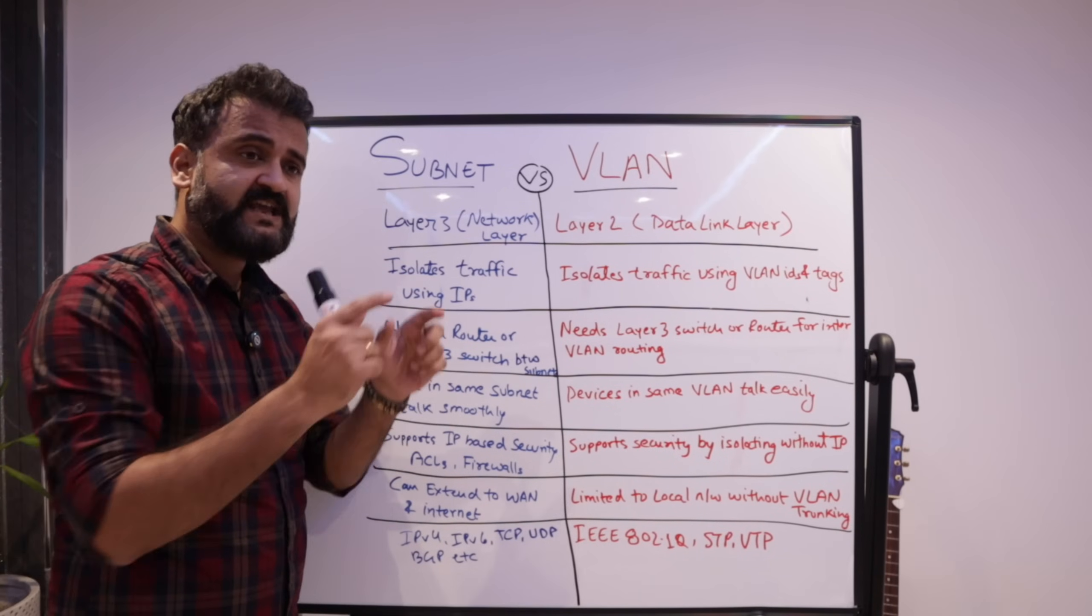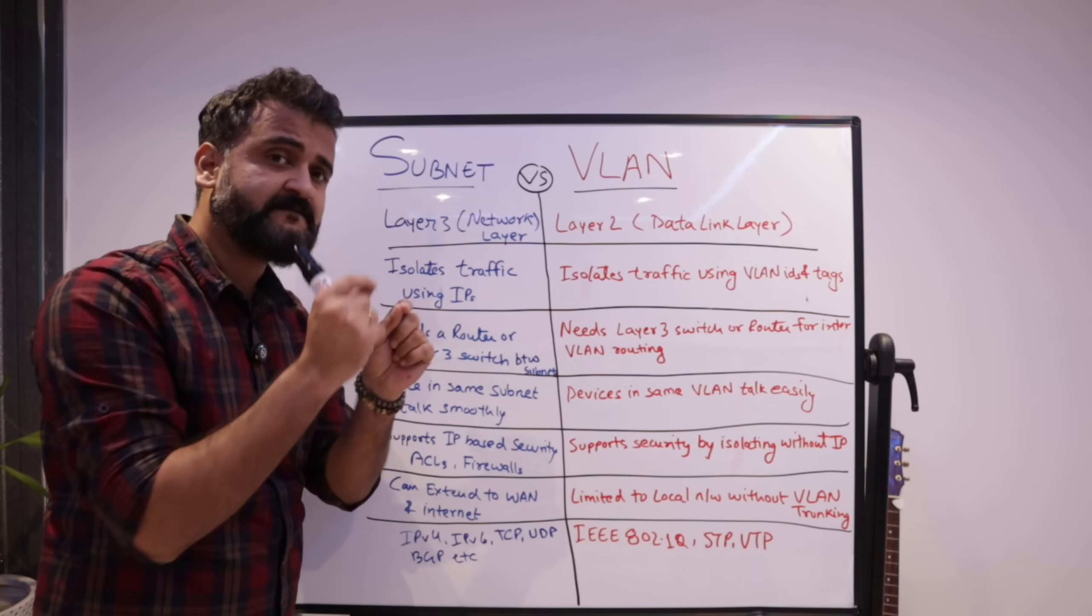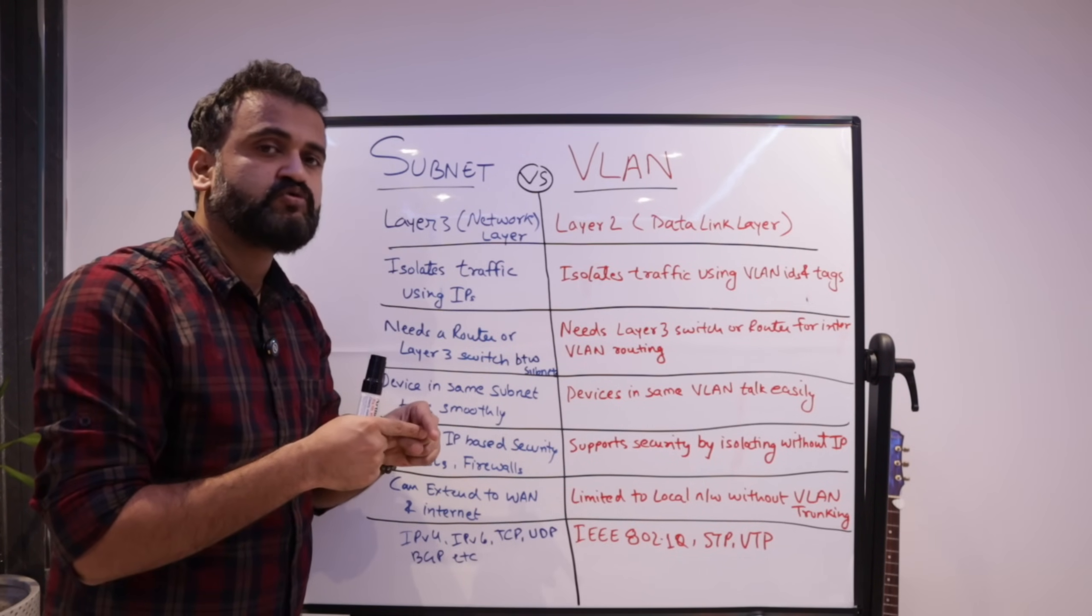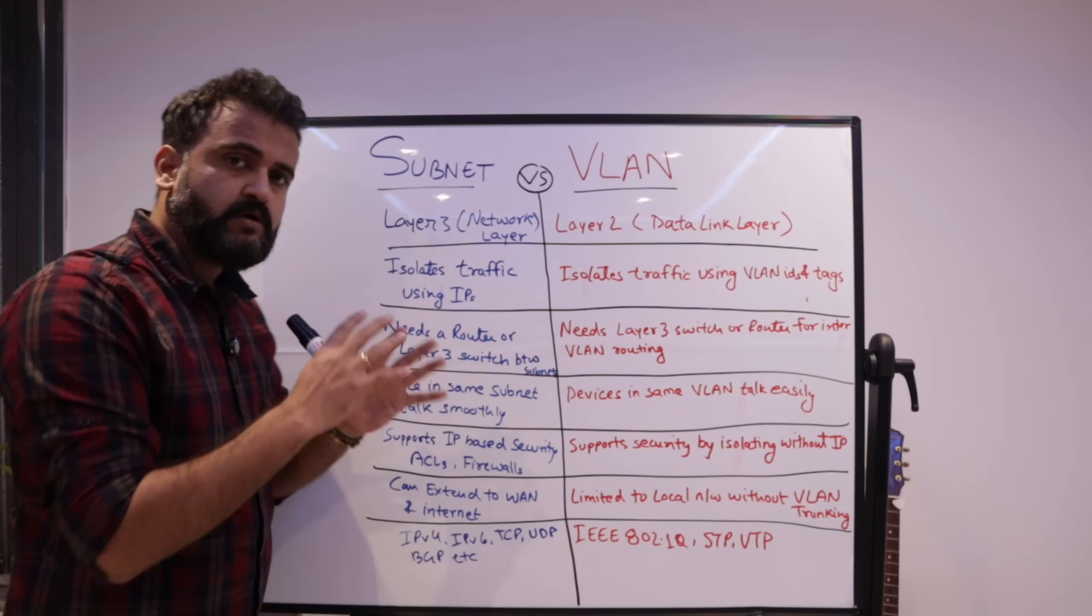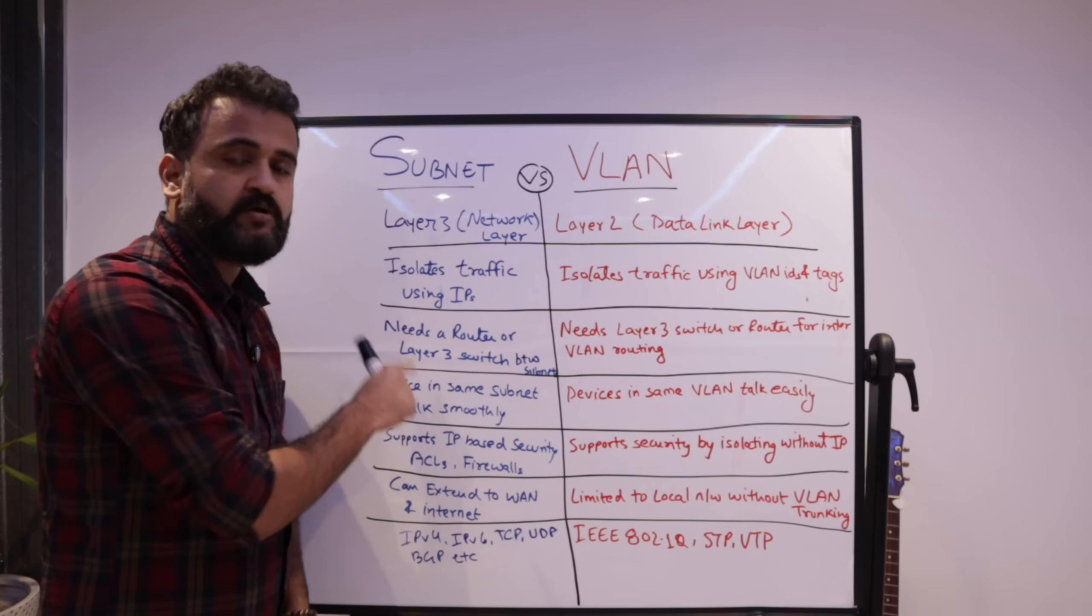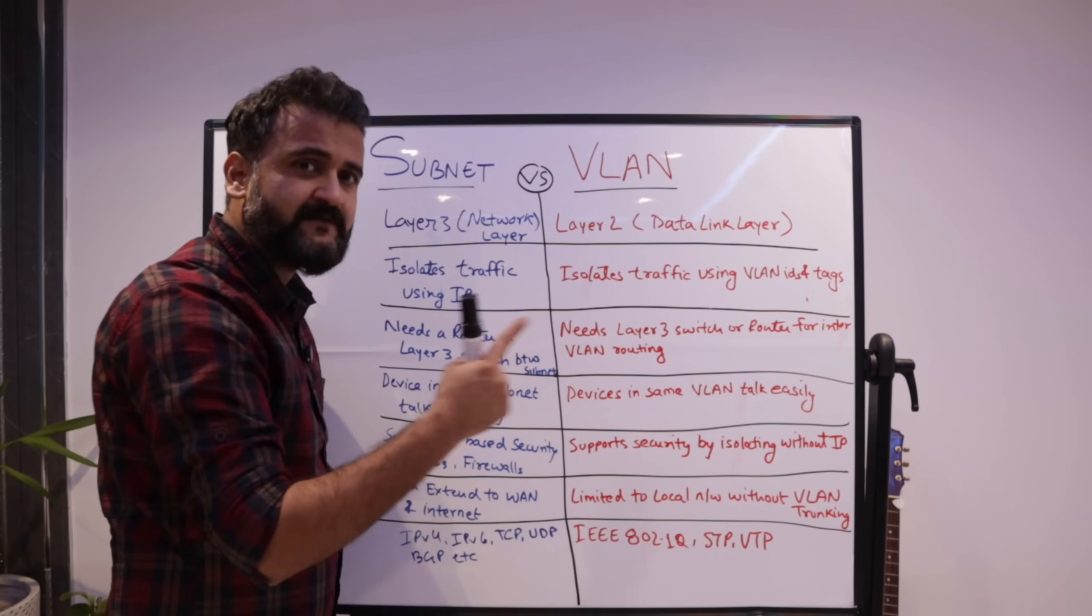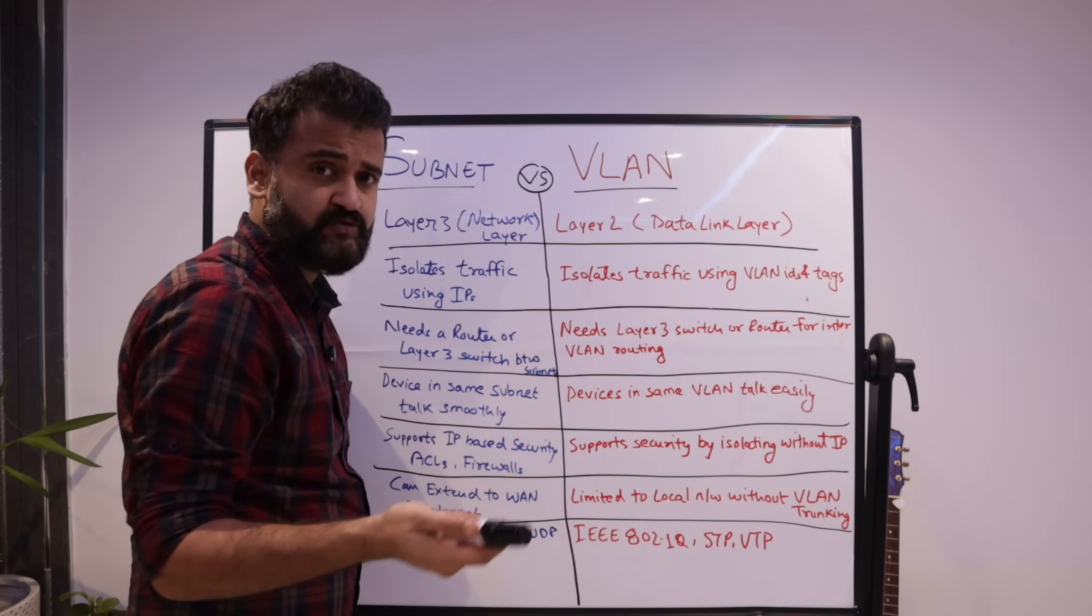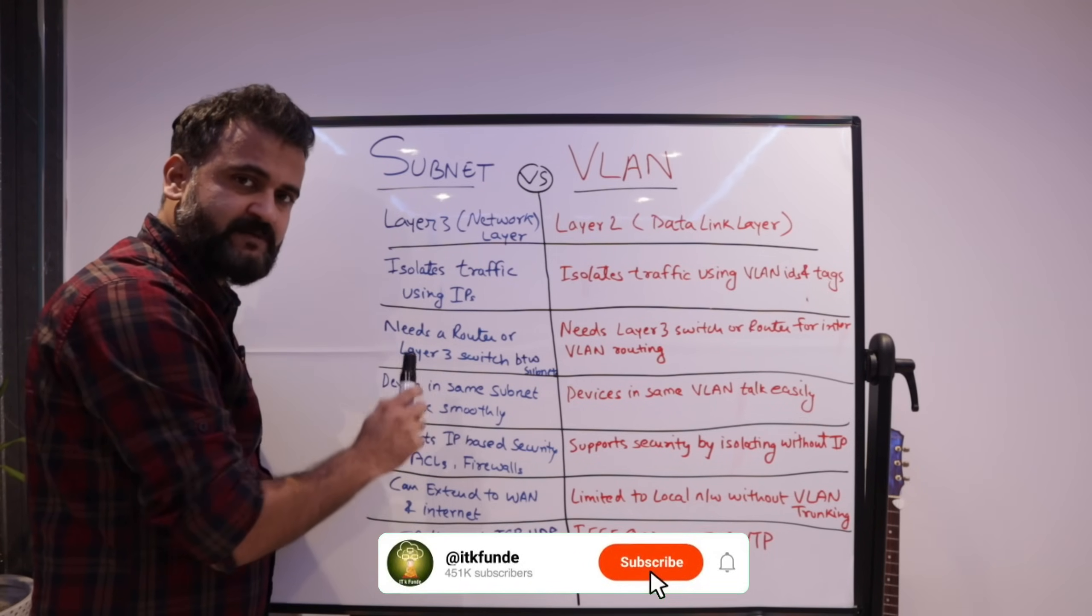So the difference is that even if two devices are in two different subnets, as far as their VLAN IDs and VLAN tags are same, it means that those two devices could communicate properly at a layer two level. Whenever it is about talking between two subnets, you will always need a router or a layer three switch. And same thing applies for VLAN. Like if you want to do inter-VLAN communication, you will need layer three switch or a multi-layer switch or a router.